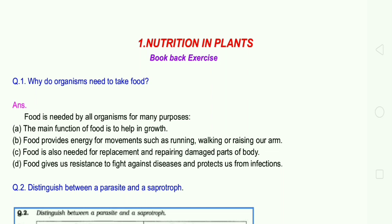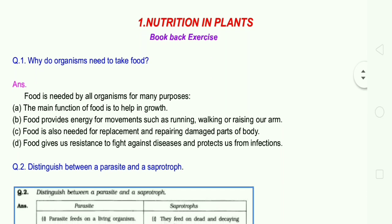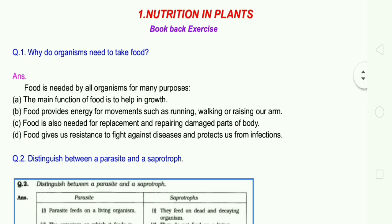Question number 1: Why do organisms need to take food? Answer: Food is needed by all organisms for many purposes. A, the main function of food is to help in growth. B, food provides energy for movements such as running, walking or raising our arm. C, food is also needed for replacement and repairing damaged parts of the body. D, food gives us resistance to fight against diseases and protect us from infections.